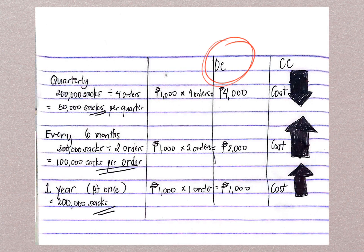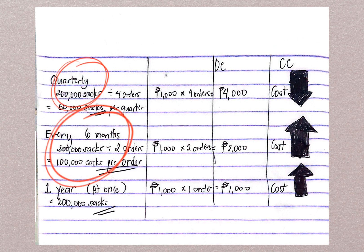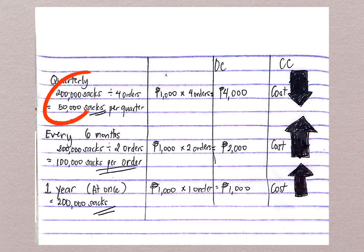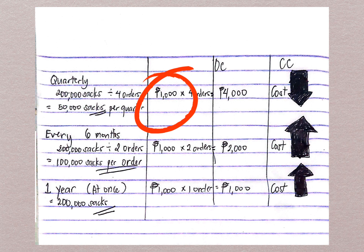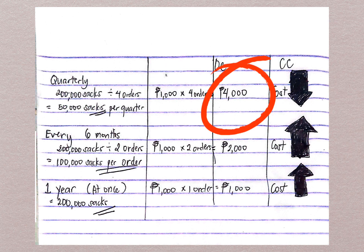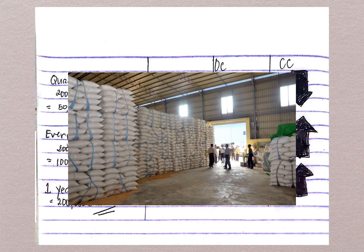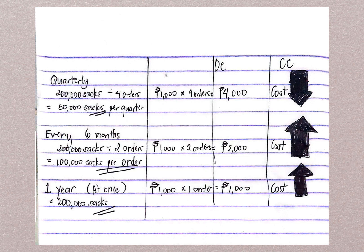We have OC for ordering cost and CC for carrying cost. We'll compare quarterly, every 6 months, and once a year. If you order quarterly: 200,000 sacks divided by 4 equals 50,000 sacks per order. With an ordering cost of 1,000 pesos per order, 4 orders times 1,000 equals 4,000 pesos for the year. For carrying cost, you only need a warehouse that accommodates 50,000 sacks, so the payment is not that much.